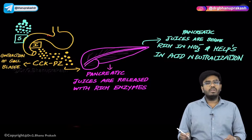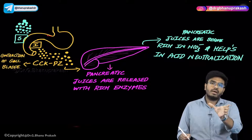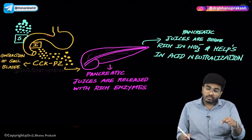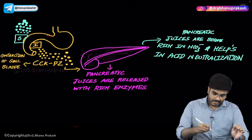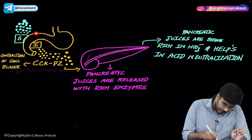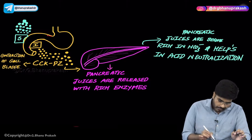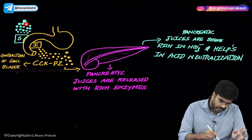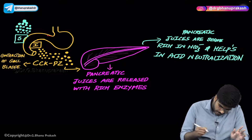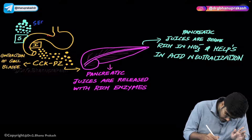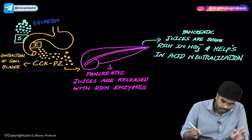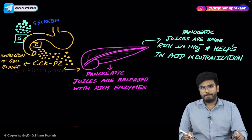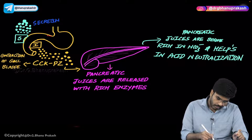Now let's talk about two different types of cells present in the duodenum. The first type is the S cell, present in the duodenum, and the other is the I cell — both S cells and I cells are present in the duodenum. The S cells produce secretin (shown in blue). The I cells produce cholecystokinin-pancreozymin (CCK-PZ), shown in yellow.